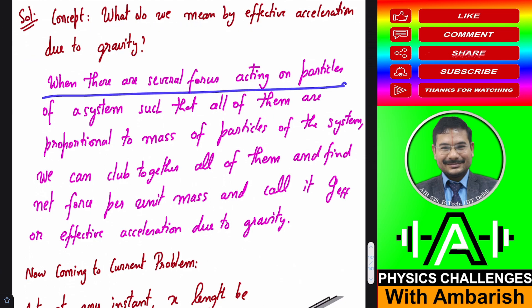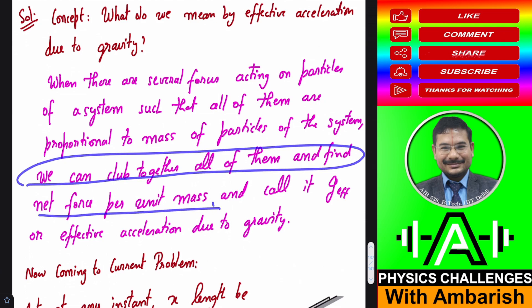What do we mean by effective acceleration due to gravity? When there are several forces acting on particles of a system such that all of them are proportional to mass, we can club together all of them and find net force per unit mass and call it g effective or effective acceleration due to gravity.